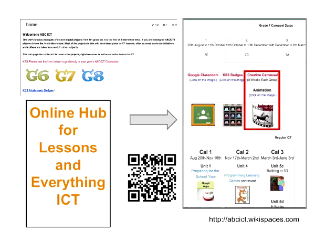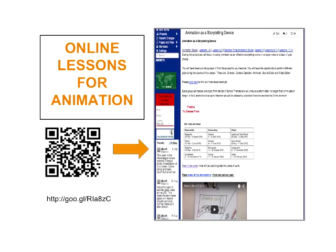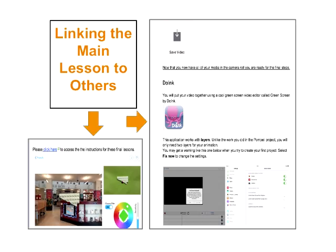This is our online hub — we have all of our lessons online so the kids can go there 24/7, see what's happening, what they need to do, how they can improve their work, and do tutorials. If they miss a day of school, it's all there. We also have Google Classroom there. The online lessons for animation show how it's set up with different classes, lessons, links, tutorials, and resources. We link to those lessons with templates and provide students with everything they need to plan every step of the project, scaffolding them as best we can.